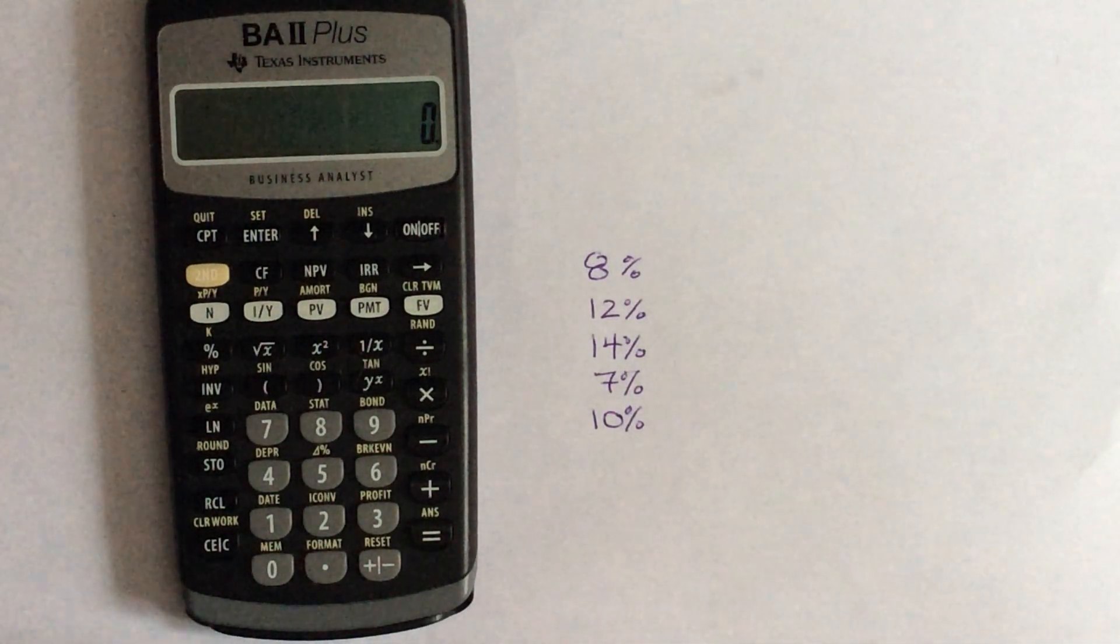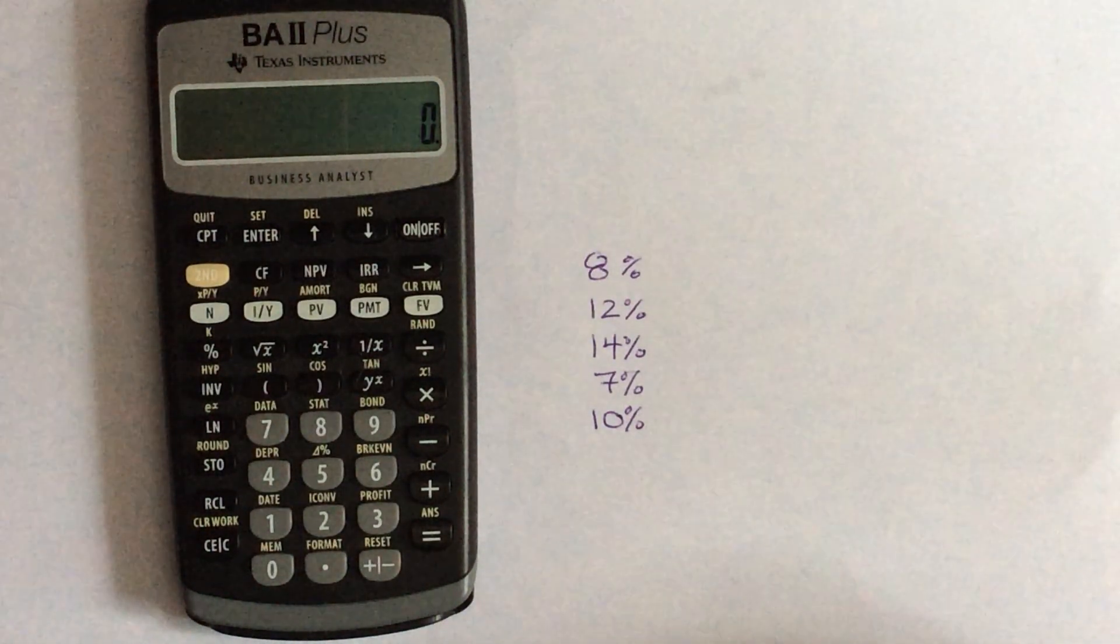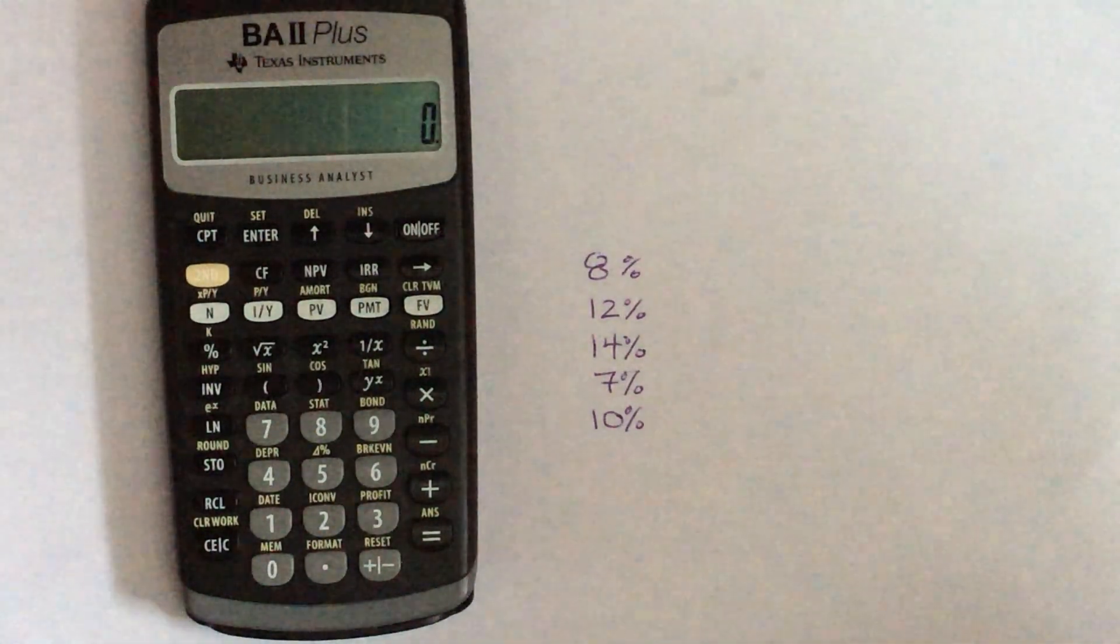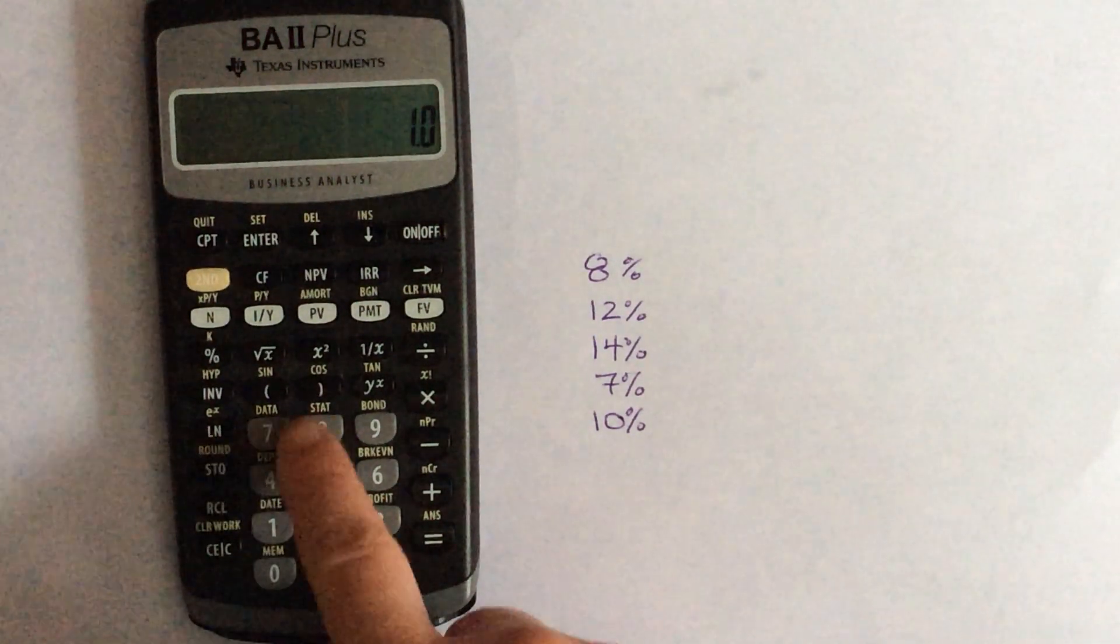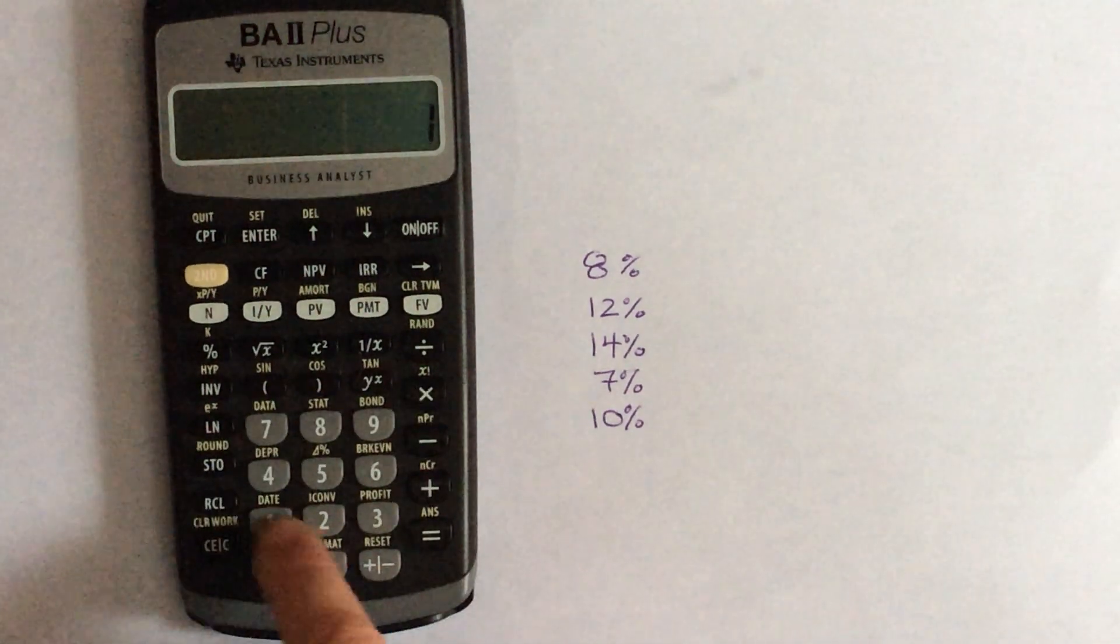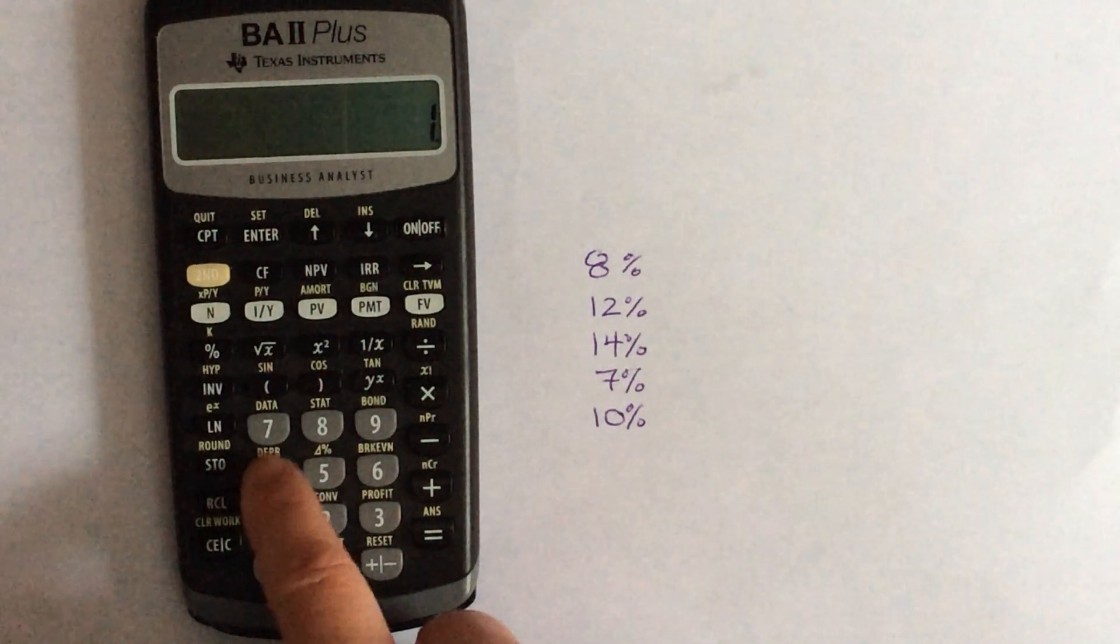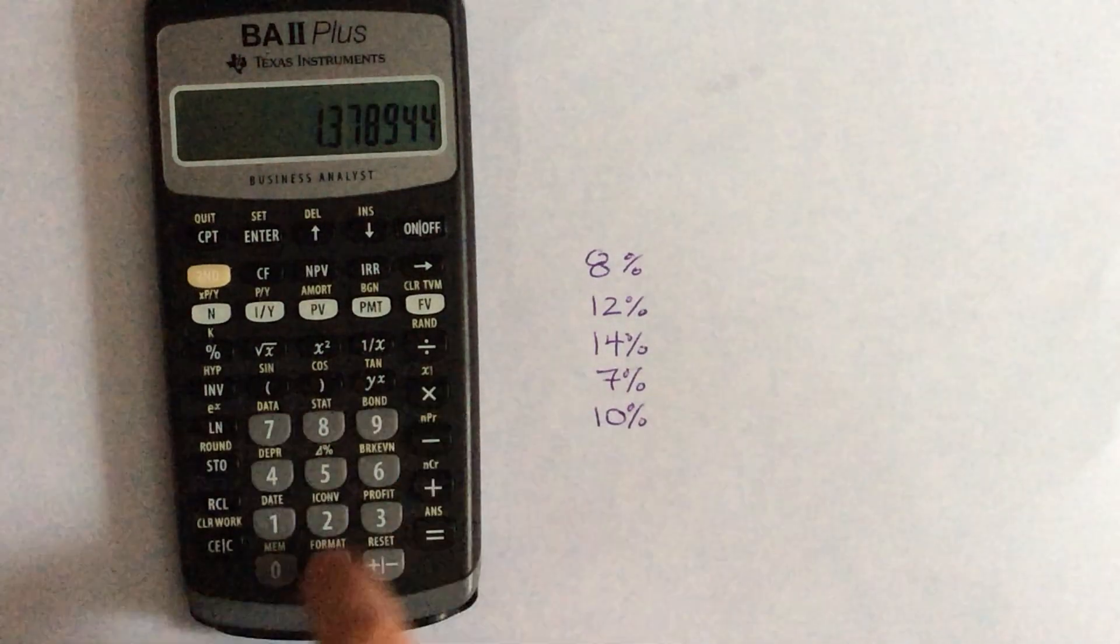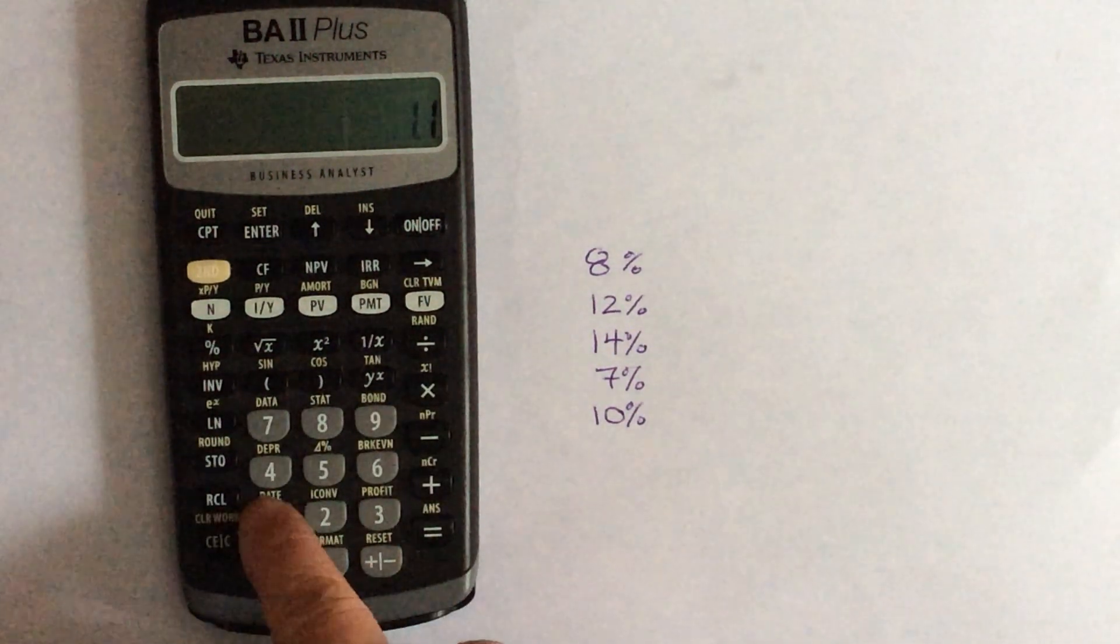So if we want to go ahead and plug these into our calculator, remember for geometric mean, you're going to plug in the percent as a decimal plus 1. So we're going to do 1.08 times 1.12 times 1.14 times 1.07 times 1.1.